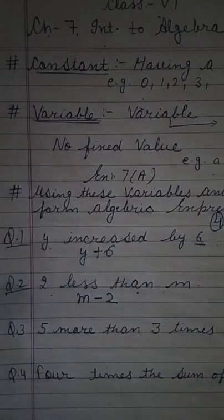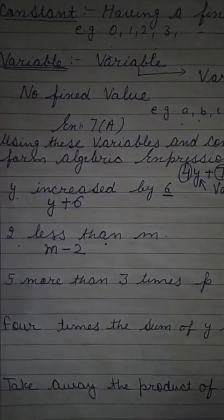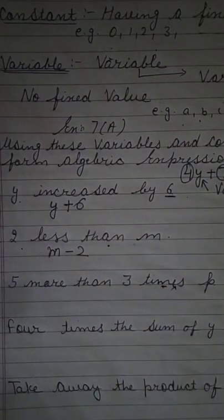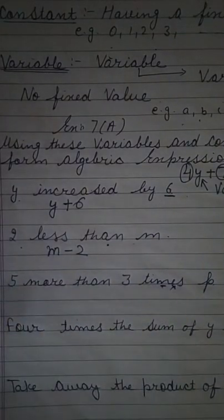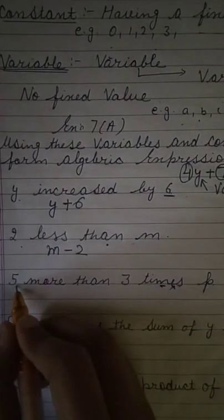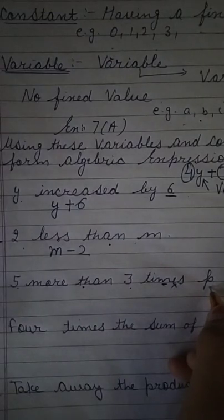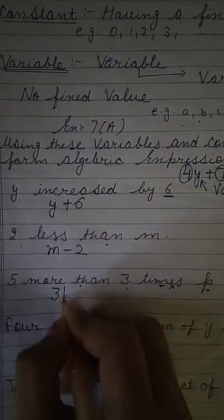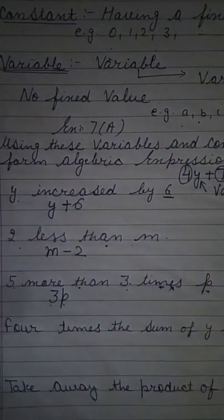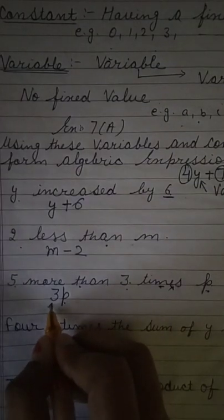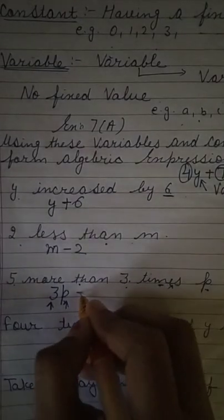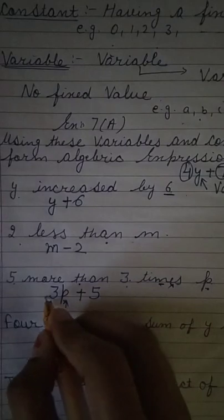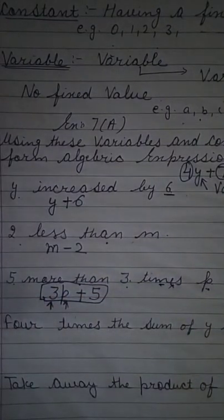Question number 3: 5 more than 3 times P. Times means multiply — so 3 times P means 3 multiplied by P. Between a constant and a variable, we never write the multiplication sign; we simply write 3P. Then 5 more than means plus 5. So the answer is 3P plus 5.